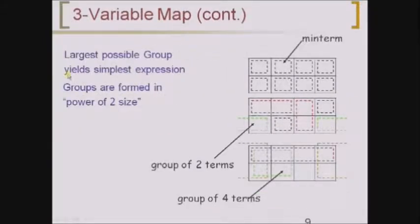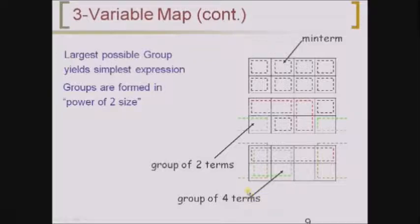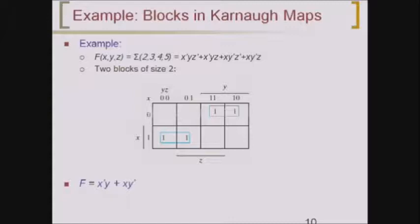The largest possible group gives the simplest expression. Groups are formed in powers of two — that is, 2⁰, 2¹, 2² and so on. As the group size increases, the expression size reduces, so we should always go for the maximum-size group. Consider function f(x, y, z) with minterms 2, 3, 4 and 5 — these are represented using the variables. We have to plot all these minterms on the K-map.